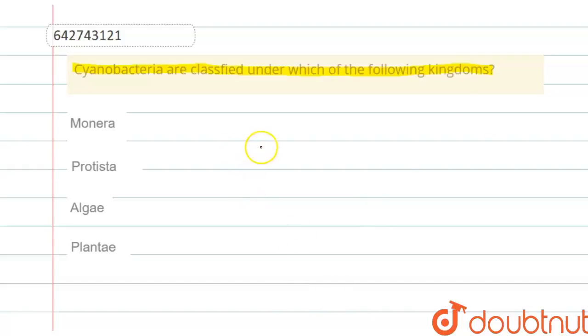So if we talk about cyanobacteria, then these cyanobacteria or blue-green algae are gram-positive photosynthetic prokaryotes.